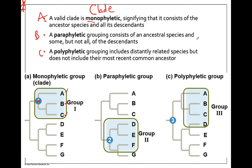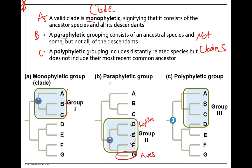B and C are not clades. Instead, these are paraphyletic groupings and polyphyletic groupings. A paraphyletic grouping includes the common ancestor and almost all or some of the descendants. For example, D, E, and F are descendants of this common ancestor, but G is also a descendant and is not included. A paraphyletic group we commonly talk about is reptiles — we usually exclude birds. If we talk about reptiles but don't include birds, that's a paraphyletic group.